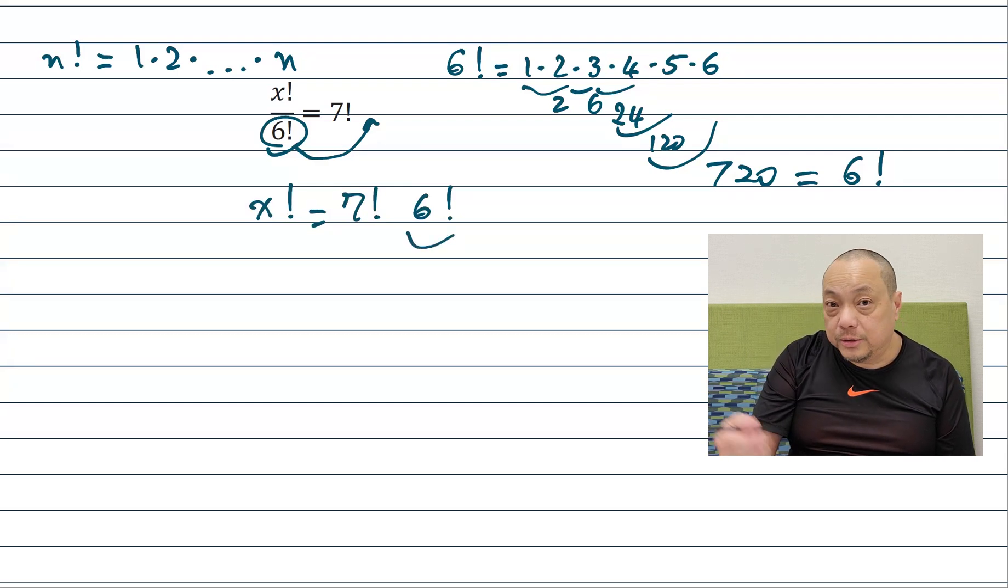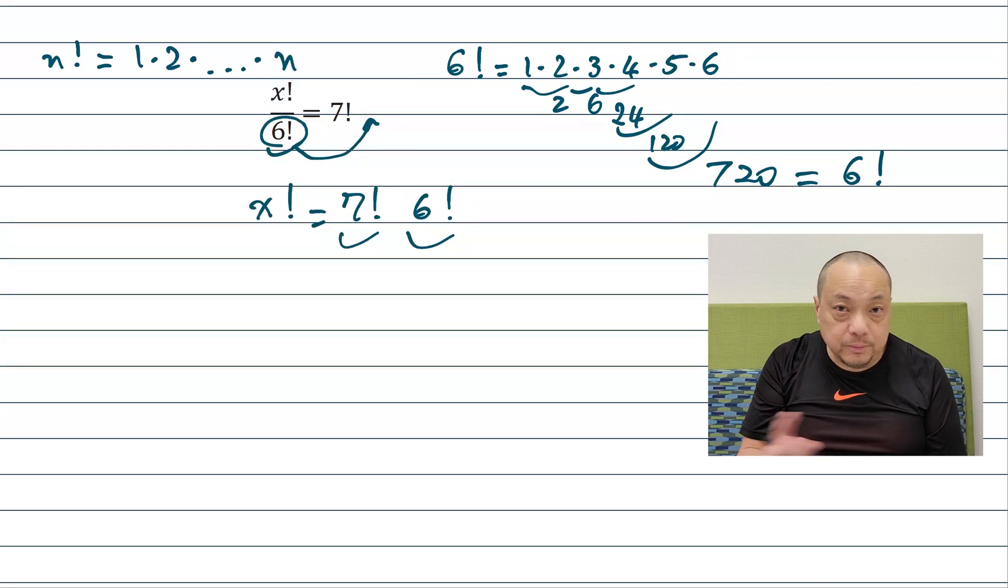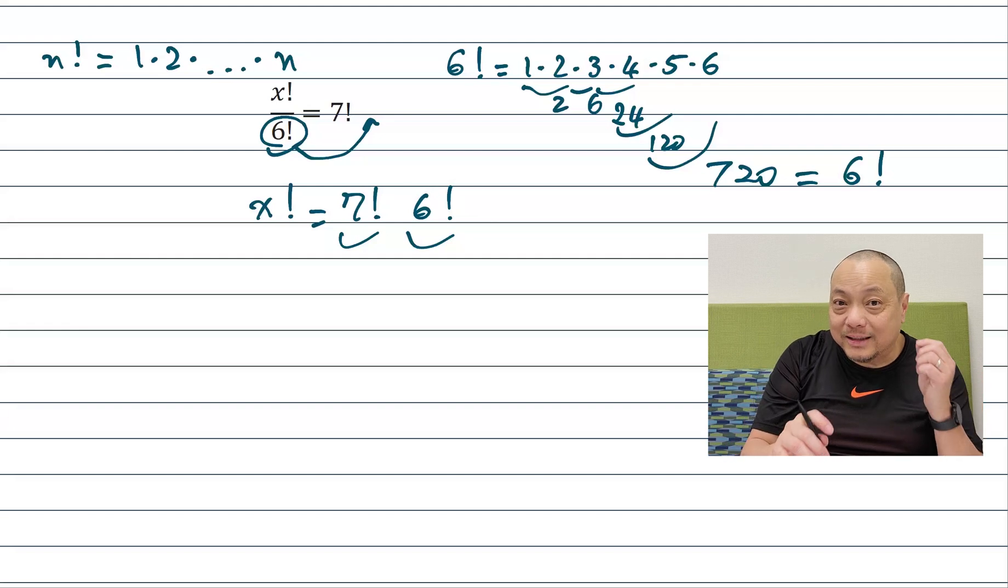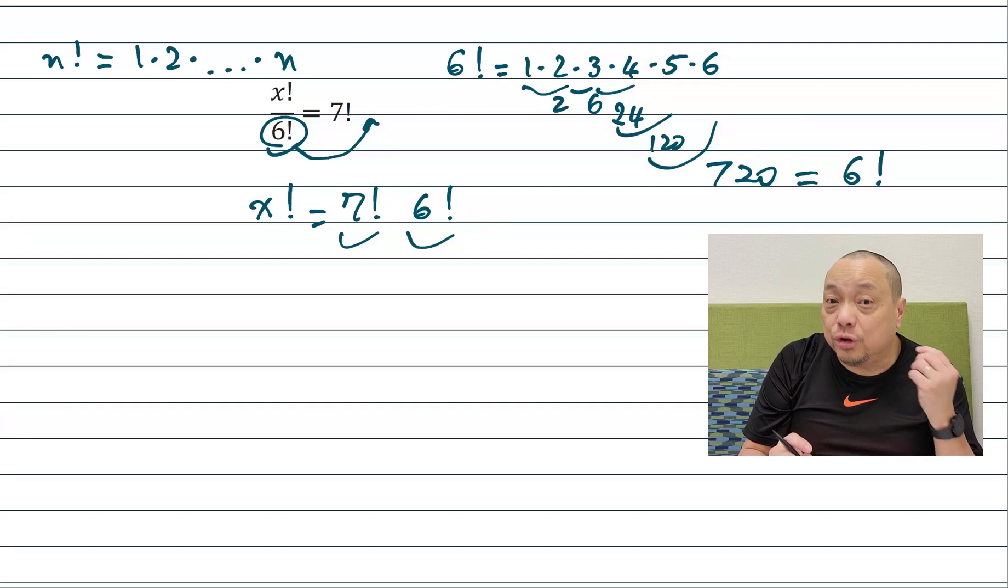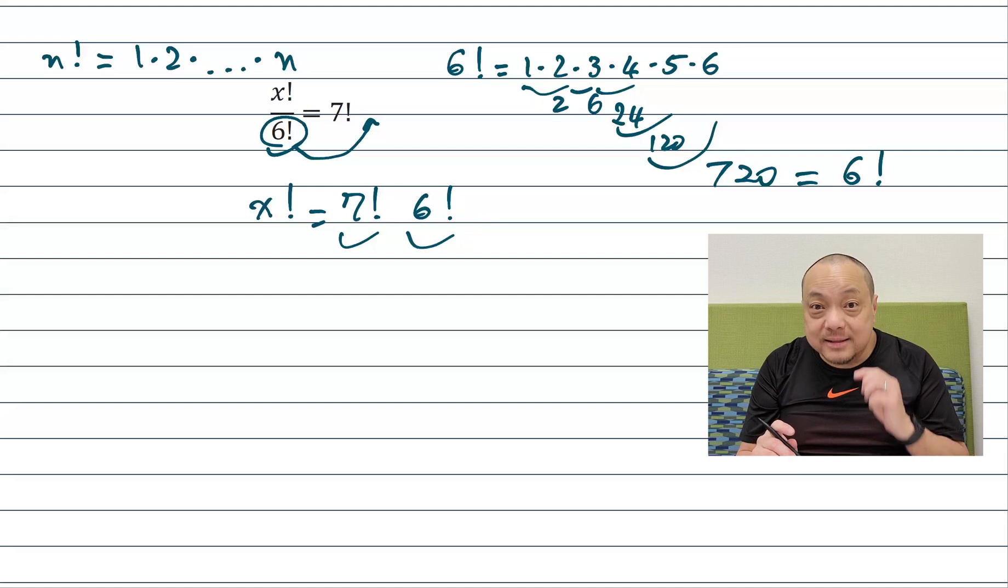No it's not the end. 6 factorial is a number 720. 7 factorial is some other number multiplied together we get some big number yes. But that would only tell us what x factorial is. It doesn't tell us what x is.